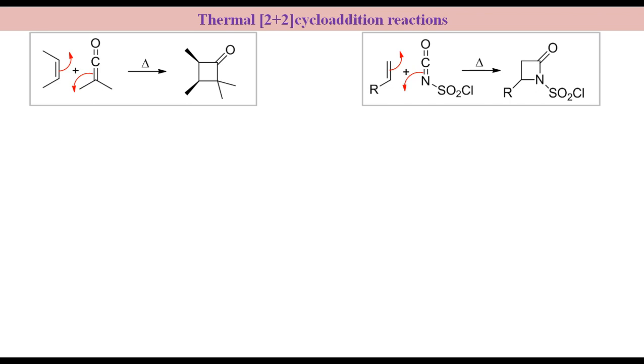In this lecture we will discuss HOMO-LUMO interaction between alkene and ketene to explain feasibility of the reaction under thermal condition. Similar explanation can be given for the reaction between alkene and isocyanate.